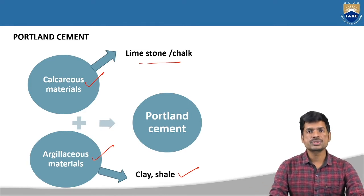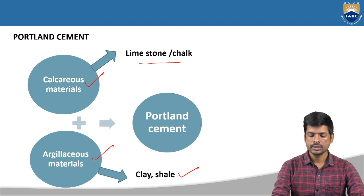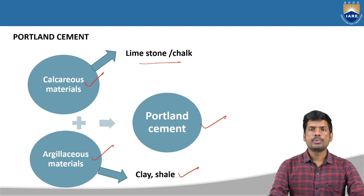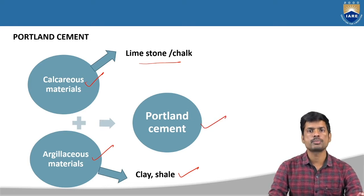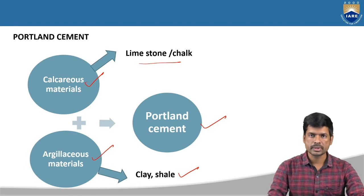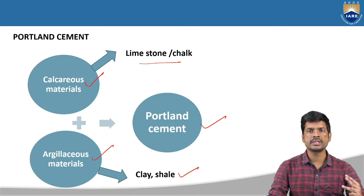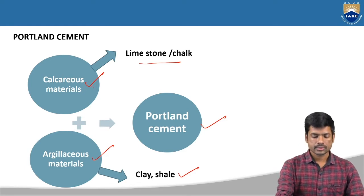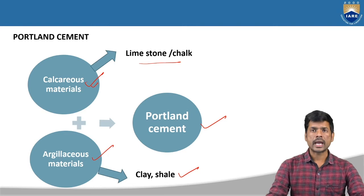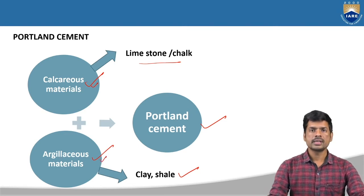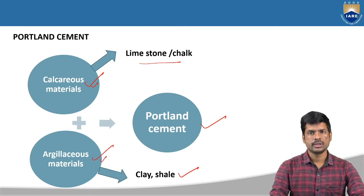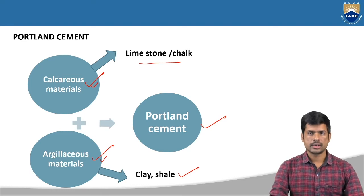By combining these two materials — calcareous and argillaceous — we are going to get Portland cement. Normally the basic type of cement is Portland cement, and in Portland cement we will be having these two major materials: calcareous materials and argillaceous materials.